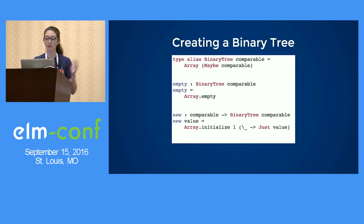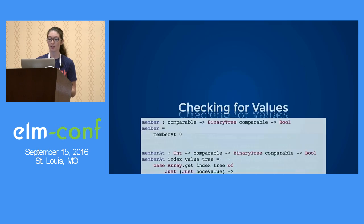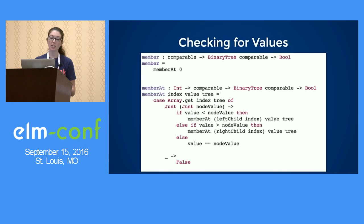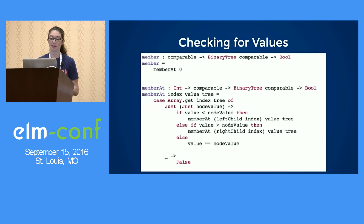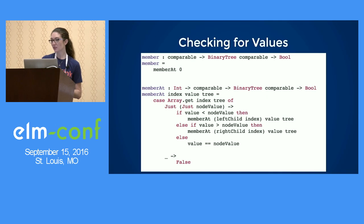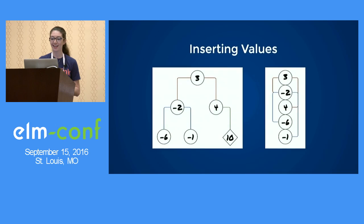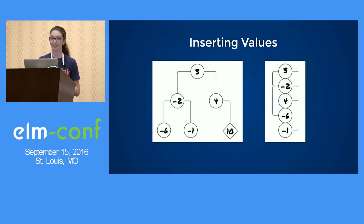As we see here, it's not super terrible to create a version of this binary tree. Checking for values is okay — we have to use a helper so that we can always start at the root node at index zero. But that casing we're doing is not super joyful. And then when we get to inserting, it's not amazing.